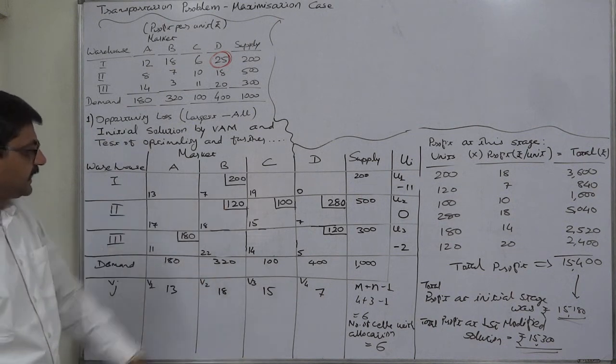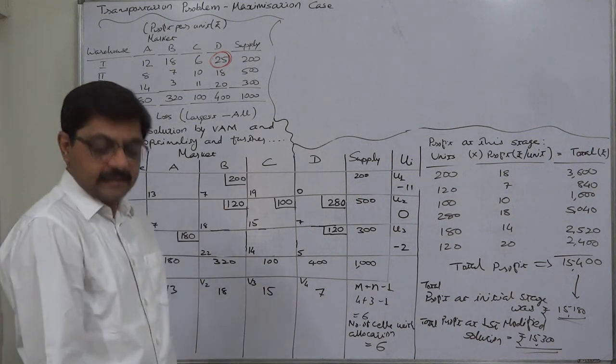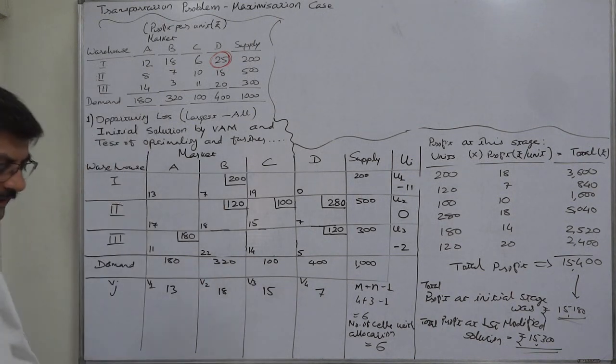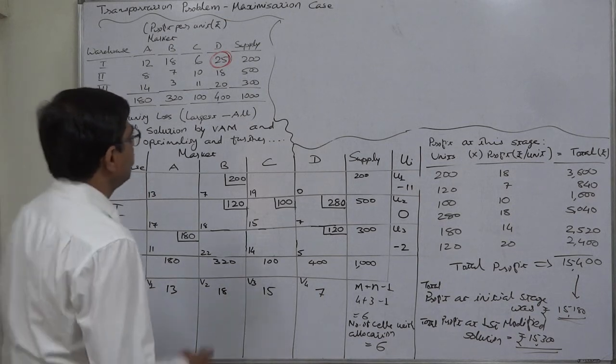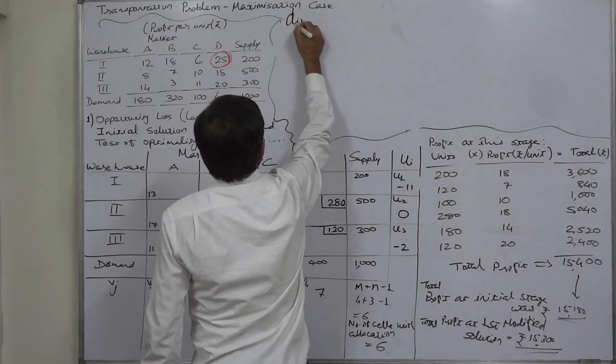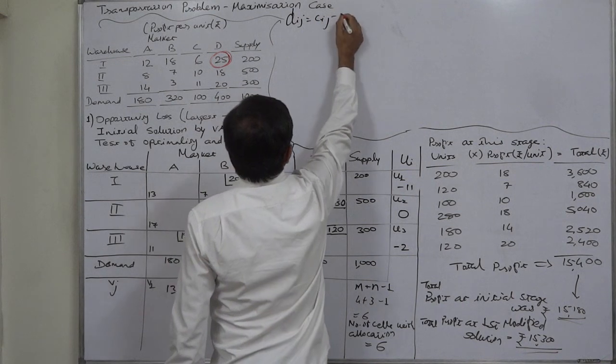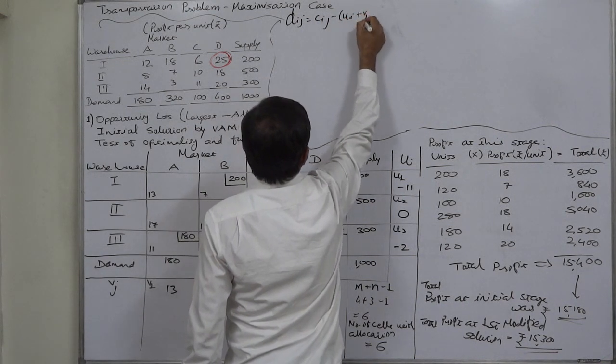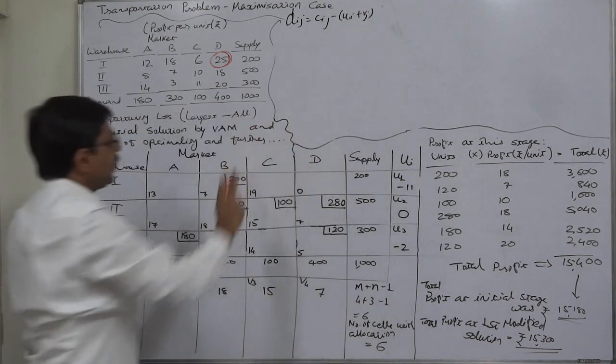Now for all the empty cells we have to calculate dij values. And to check the optimality, dij equals to cij minus ui plus vj for all empty cells.